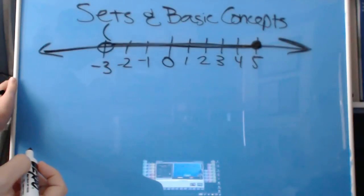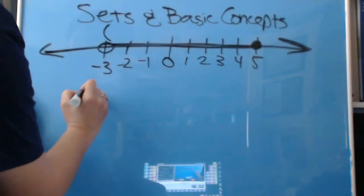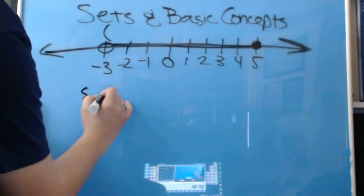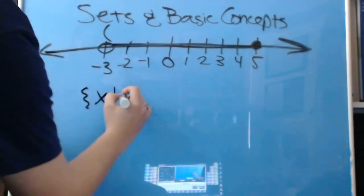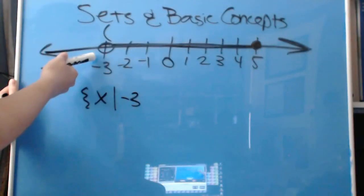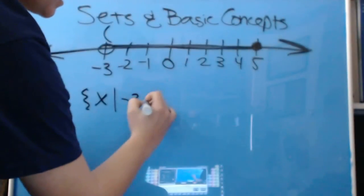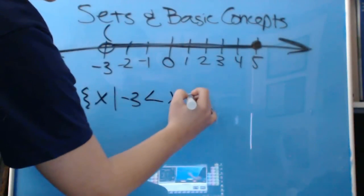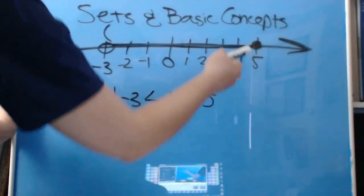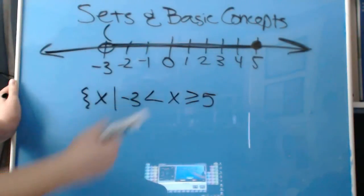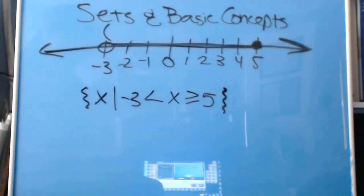Now we need to write this one in set builder notation. We write that X is such that negative three, because that is where the line ends on negative three, even though it is not included, that's perfectly fine. Negative three is less than X, which is less than or equal to the number five. Because on the five, the circle is filled in, so therefore the five is included. And then we close the set notation.